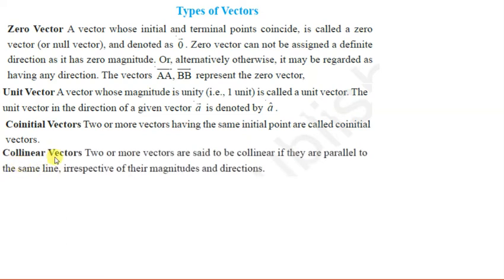Then we have collinear vectors. Two or more vectors are said to be collinear if they are parallel to the same line, irrespective of their magnitude and directions. Agar do ya do se zyada vectors woh same line ke parallel hain, toh unhein hum collinear vectors kehenge. Unka magnitude kuch bhi ho ya direction apas mein change bhi ho sakta hai, but if they are parallel to the same line they are called collinear vectors.